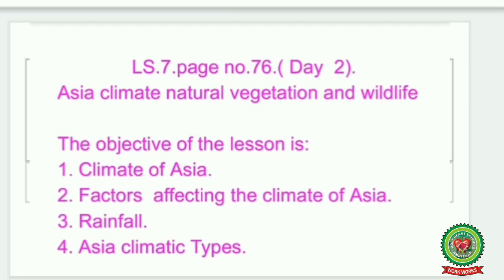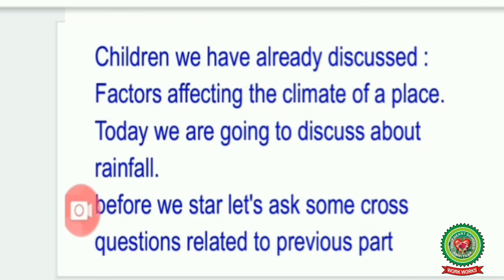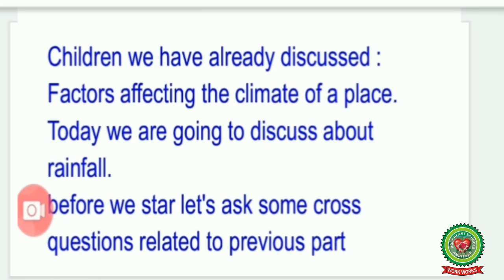The objective of the lesson is: climate of Asia, factors affecting the climate of Asia, rainfall in Asia, and climate types. Children, we have already discussed the factors affecting the climate of a place. Today we are going to discuss about rainfall. Before we start, let's ask some cross questions related to the previous part.